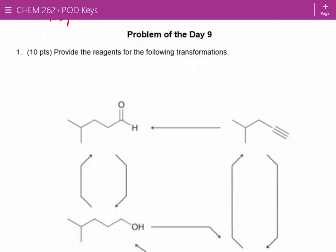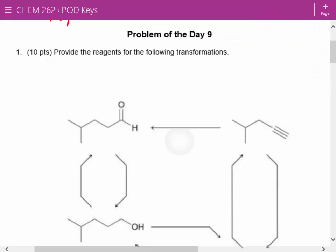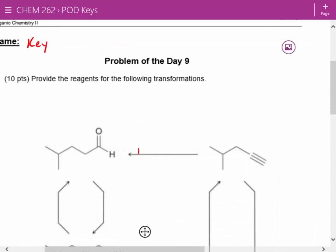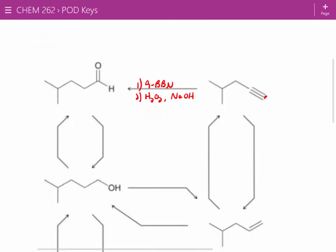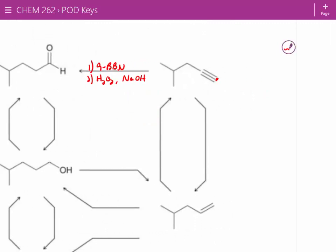For the first one, we would need BH3 followed by hydrogen peroxide and sodium hydroxide. When we do that, we do the anti-Markovnikov hydration of an alkyne, so it will add to that carbon. Let's just work our way through here. If we go down to the alkene, we need H2 and Lindlar's catalyst.